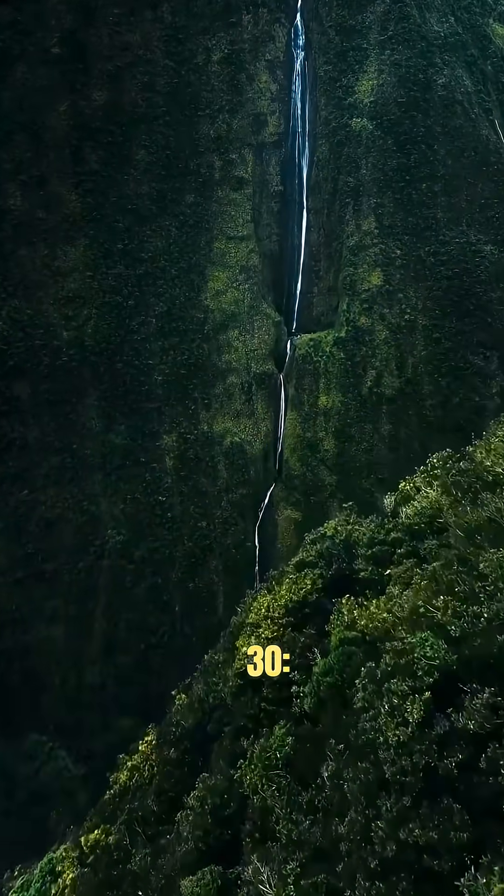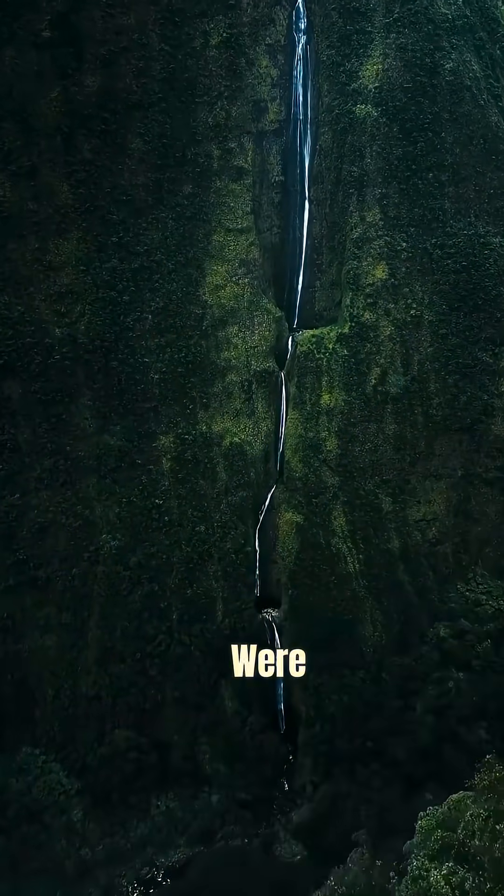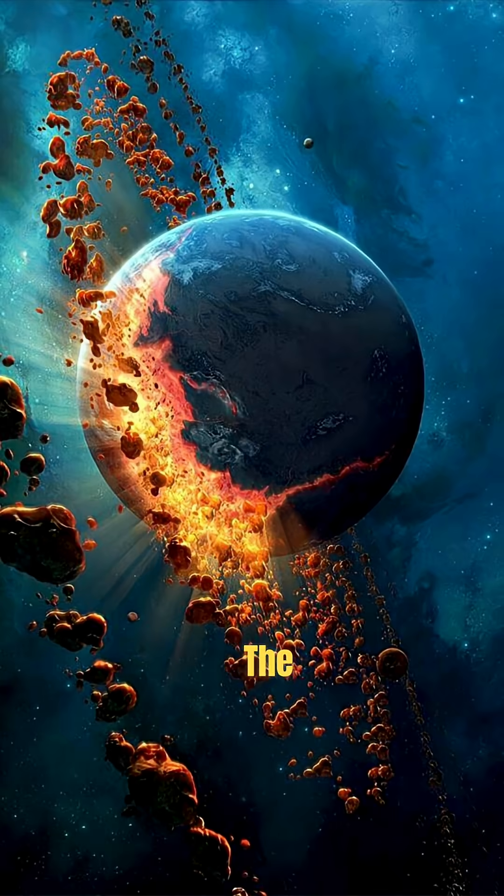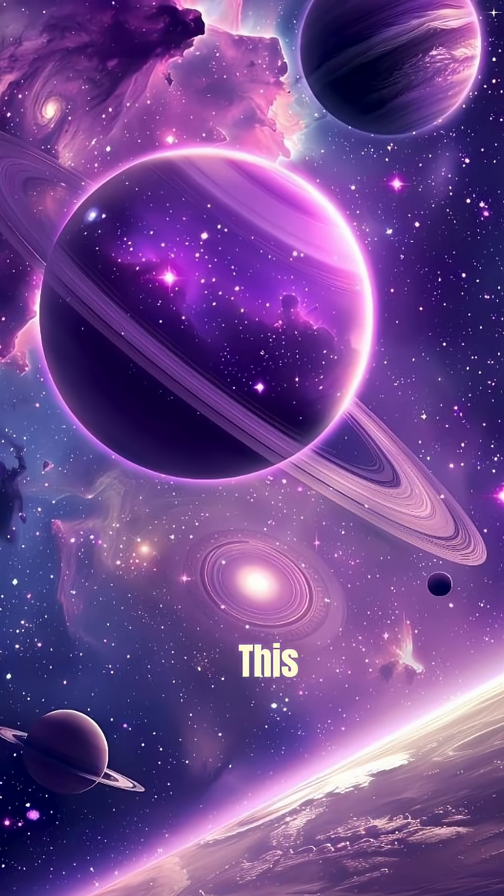Surah Al-Anbiya verse 30: The heavens and the earth were joined together, then we separated them. Scientists say this is like the Big Bang. Surah Al-Dariyat verse 47: We are expanding the heavens. This is consistent with the universe expansion.